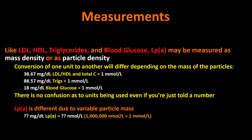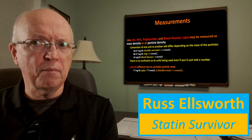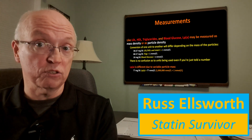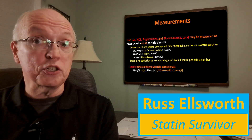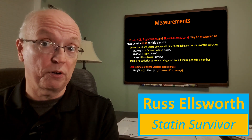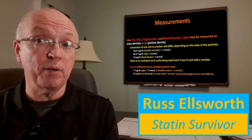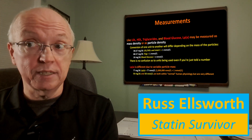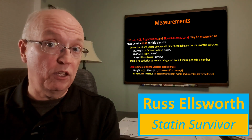That's not the case with LP little a. For one thing, there's no single conversion factor we can apply because LP little a particles vary greatly in mass. They also don't measure in millimoles per liter — they measure in nanomoles per liter. A nanomole is one billionth of a mole. Interestingly, they still do measure on the mass side in milligrams per deciliter. Unfortunately, there's overlap in values between these different measurements — 50 milligrams per deciliter makes sense, and 50 nanomoles per liter also makes sense. If you tell me your value is 50, we'd need to know the units to make sense of it.